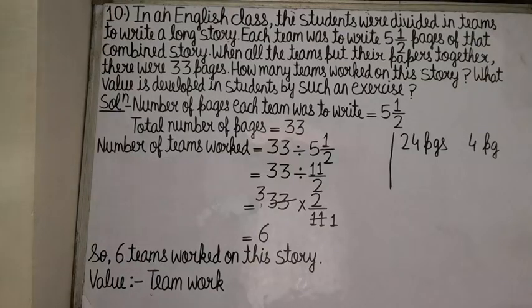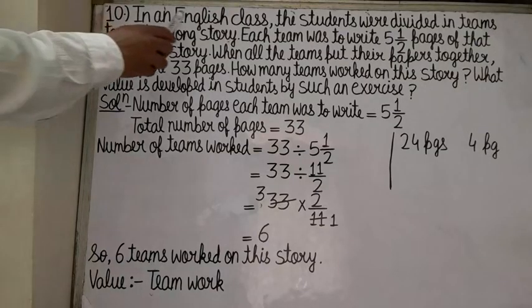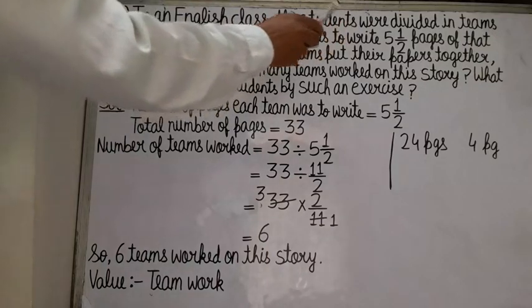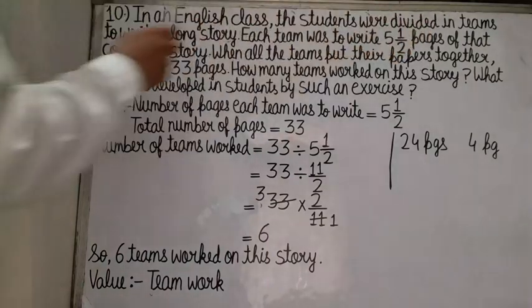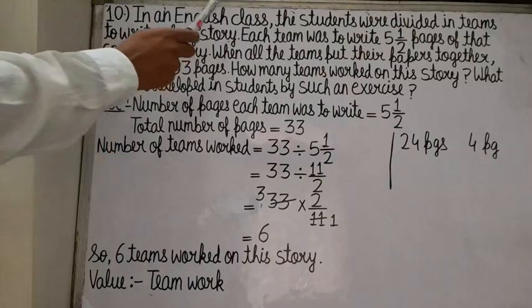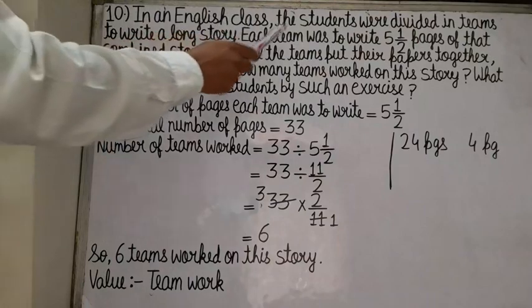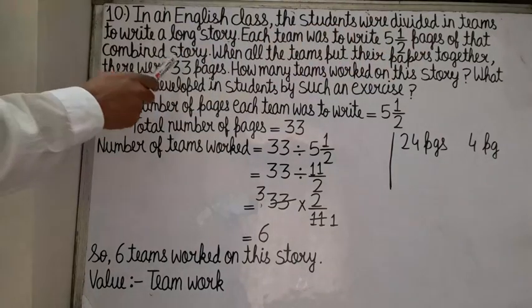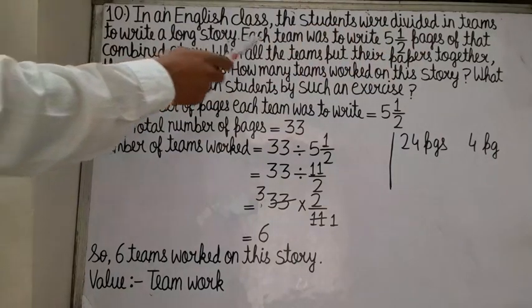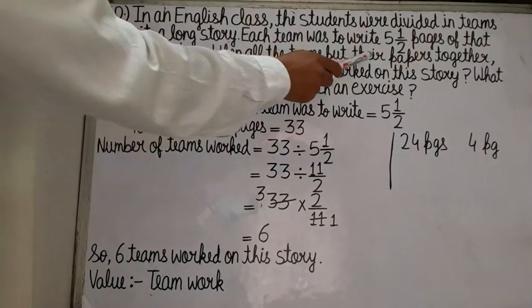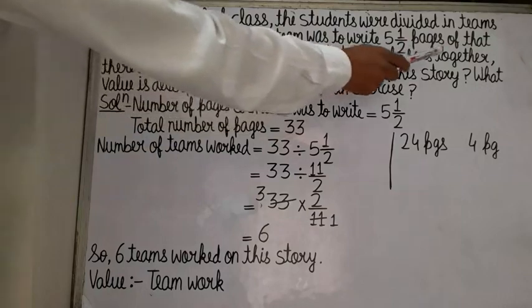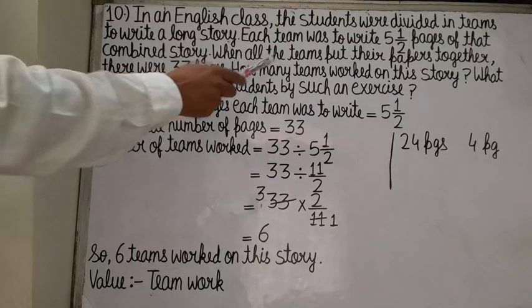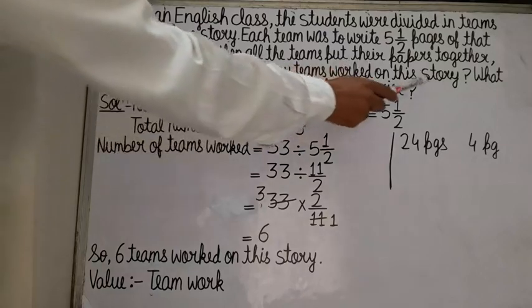Next, question number 10. In an English class, the students were divided into teams to write a long story. Each team was to write 5 and 1/2 pages of that combined story. When all the teams put their papers together, there were 33 pages. How many teams worked on this story?